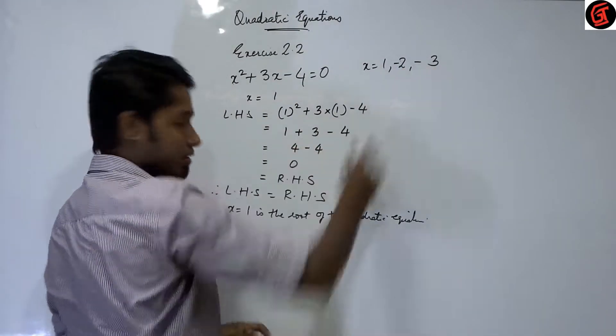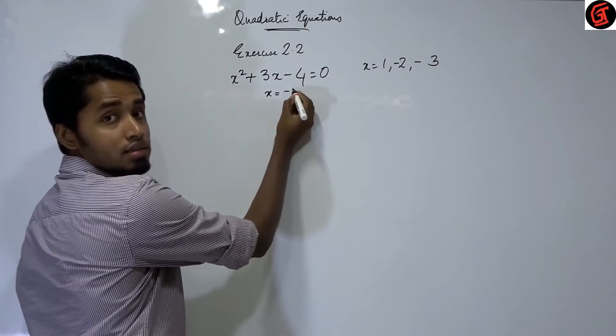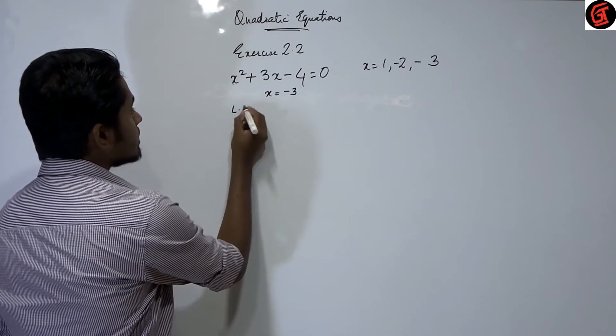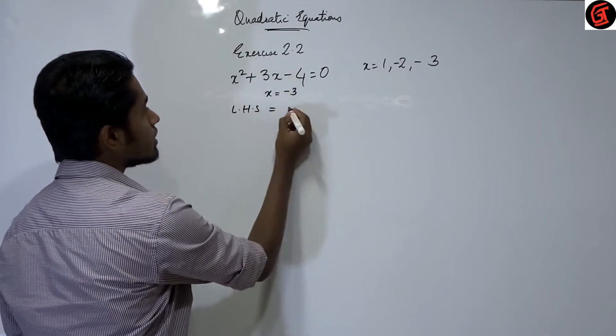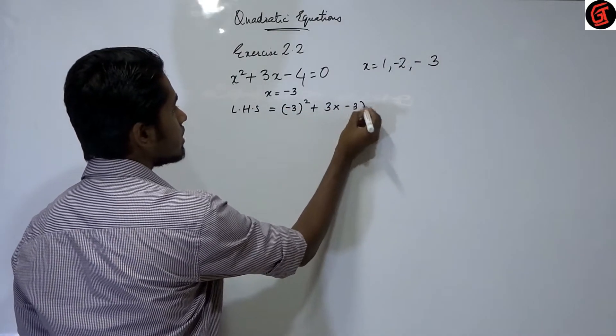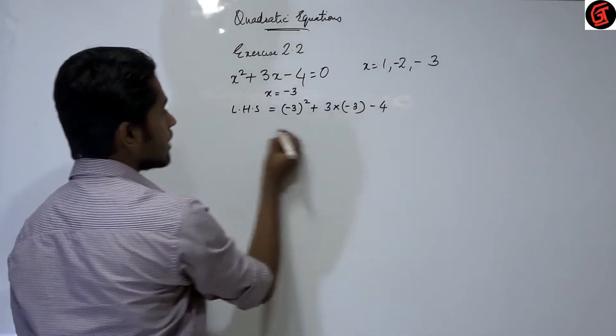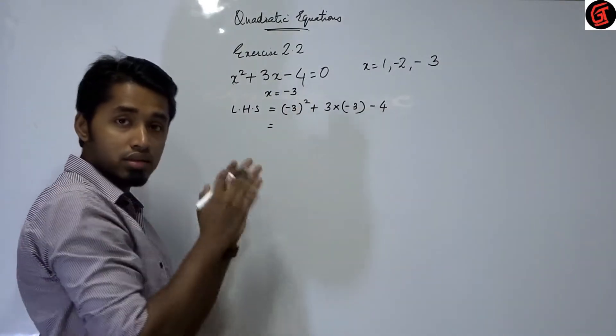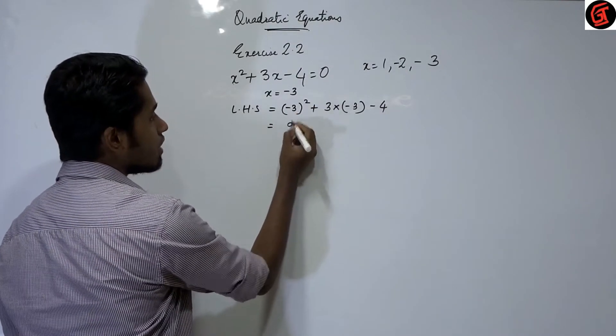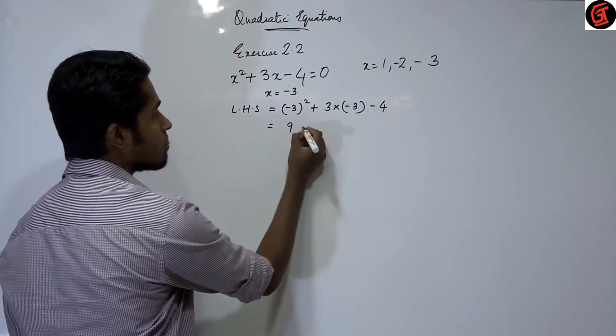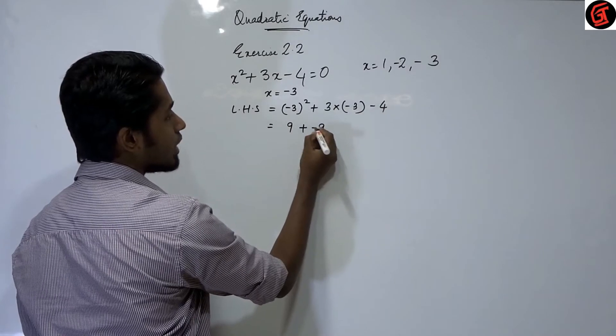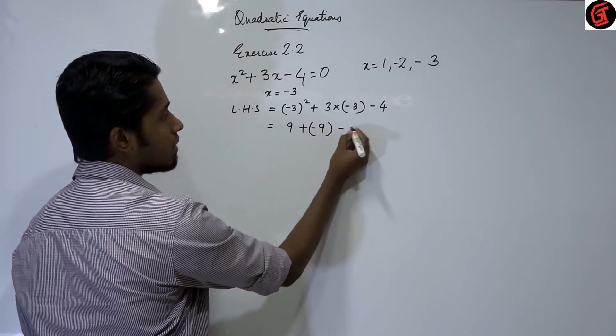Let's check for minus 3. When x is equal to minus 3, I hope you guys are paying attention here. LHS is equal to now x square, so minus 3 the whole square plus 3 multiplied by minus 3 minus 4. That is equal to minus 3 the whole square is minus 3 into minus 3. Minus and minus you get plus. So you get 3 square is 9. Plus 3 into minus 3 is minus 9. When there is a minus, we put a bracket. Minus 4.